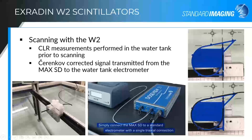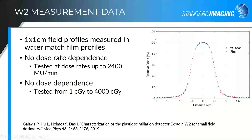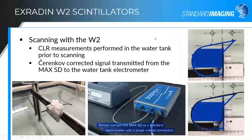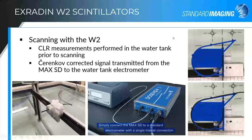This shows the minimum versus maximum fiber configuration in the water tank. You don't need to perform this every time you scan — it's a one-time setup prior to scanning and then occasionally afterwards. The signal from the scintillator tends to decrease by about 2% for every thousand gray received, so it does require periodic recalibration throughout its lifetime.